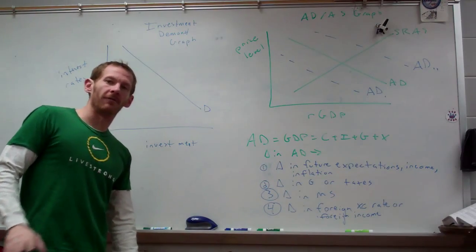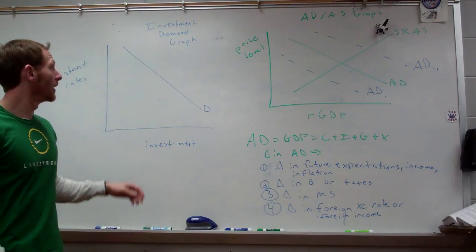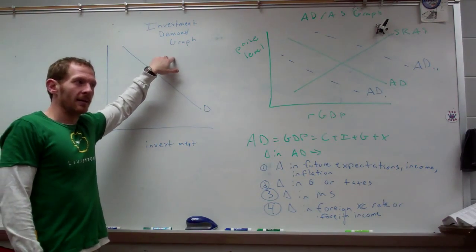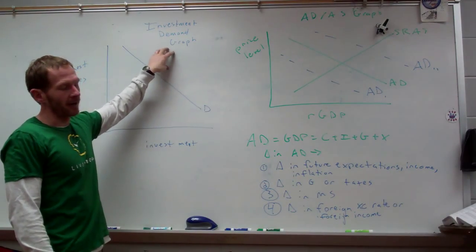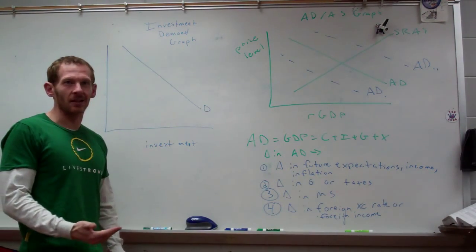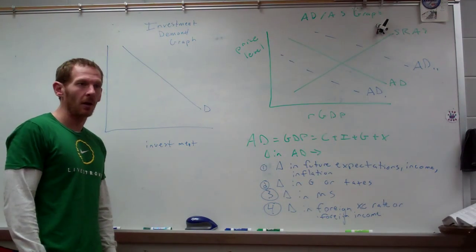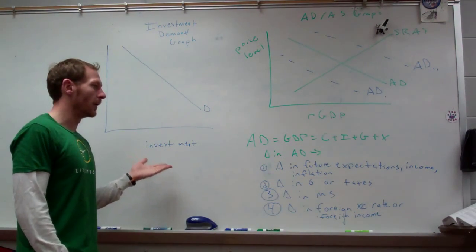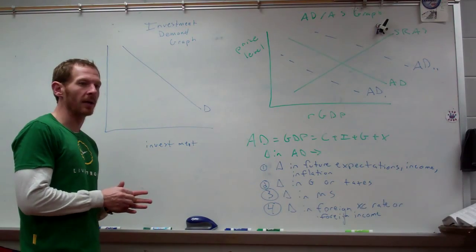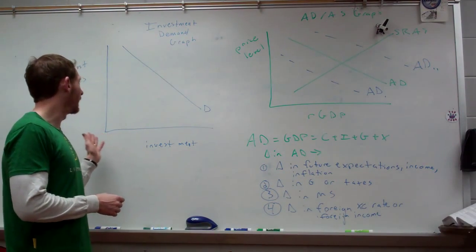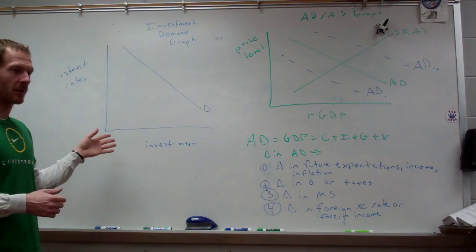We're looking at two graphs now. We're starting fiscal policy and looking at two graphs. The first one I want to talk about is the investment demand graph. So look at the graph here on the left. You're not going to see this a ton on the AP exam, at least in the free response section.